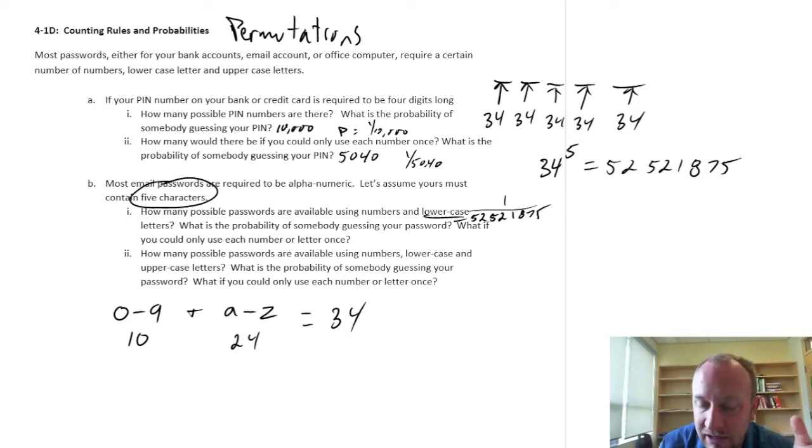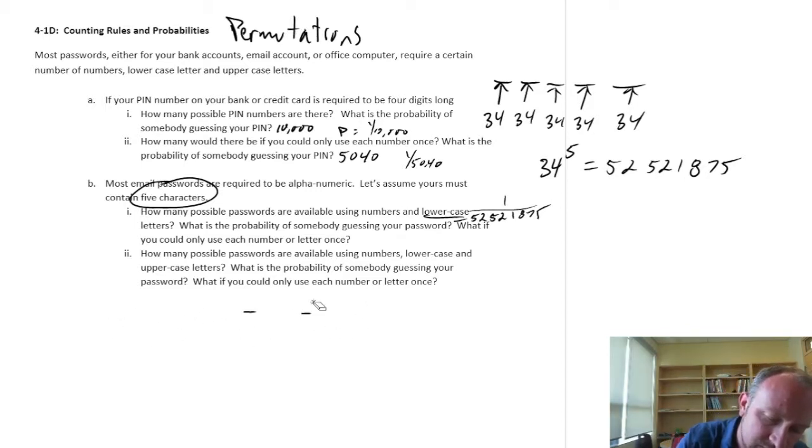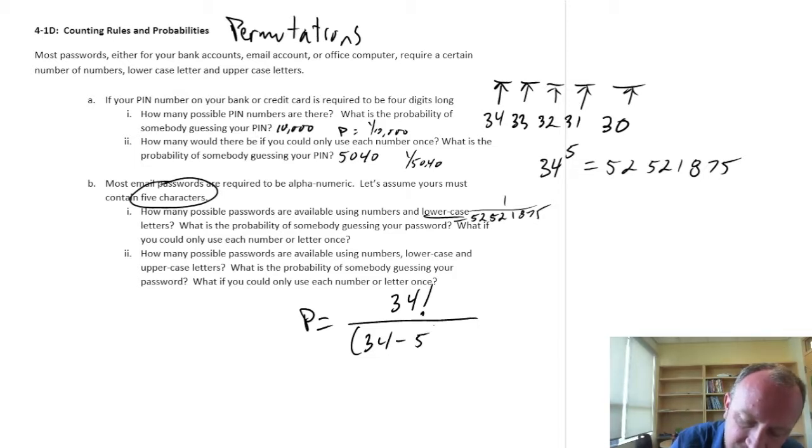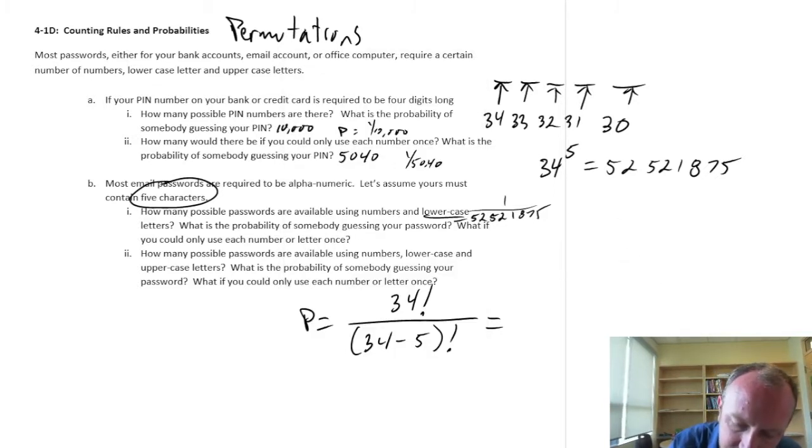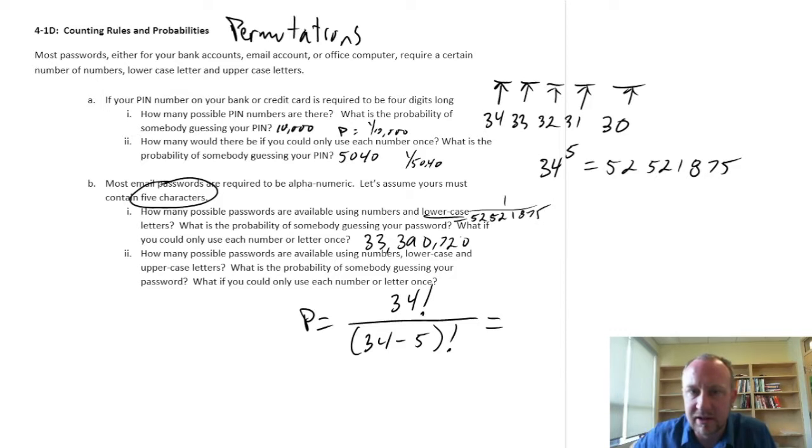What if I could only use each number and letter once? So, now, I have 34 times 33 times 32 times 31 times 30, which is, using our formula, this is 34 factorial divided by 34 minus 5 factorial. And so, this is going to be, let's see, 34 factorial, I'm not even going to write that out, divided by 34 minus 5 factorial equals 33 million 390. So, 33 million 390 and 720. Okay, and probability of somebody guessing it would be 1 in 33, let's say 33.4 million. Moving on.